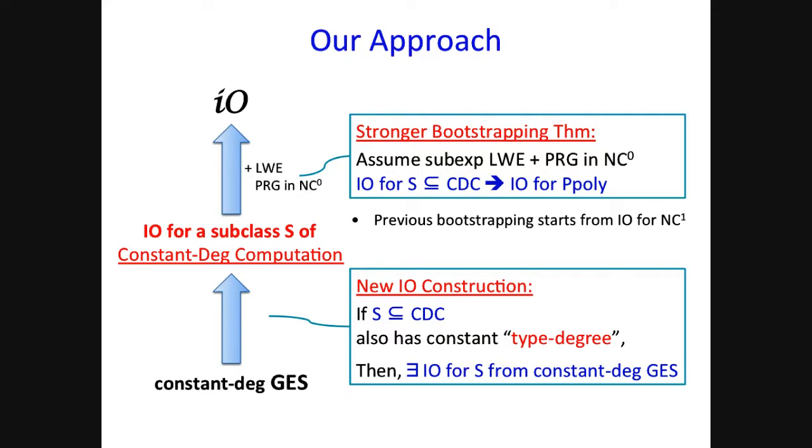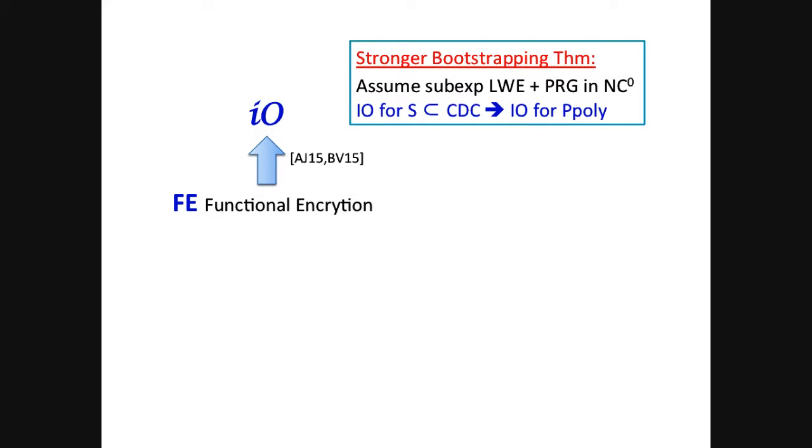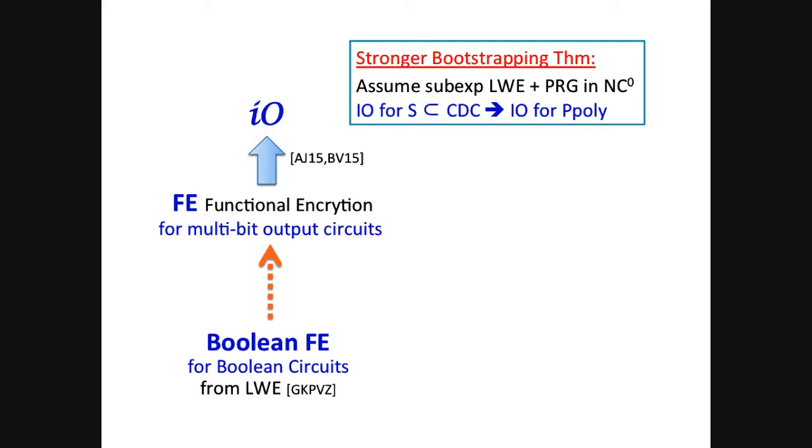So for the rest of the talk, I won't have time to go into this new IO construction. I'll just try to give you some high-level idea how the bootstrapping theorem works. So the starting point of our bootstrapping theorem is the recent transformation from functional encryption, or FE, to IO. Unfortunately, so far, we don't have construction of FE from any standard assumption. The best we know how to do is this weaker version called the Boolean FE from the assumption of learning with errors. So Boolean FE, as the name suggests, handles only Boolean circuits. In contrast, the full-fledged FE also handles those multi-bit output circuits. Therefore, the natural question is, can we upgrade? Can we go from the bottom to top?